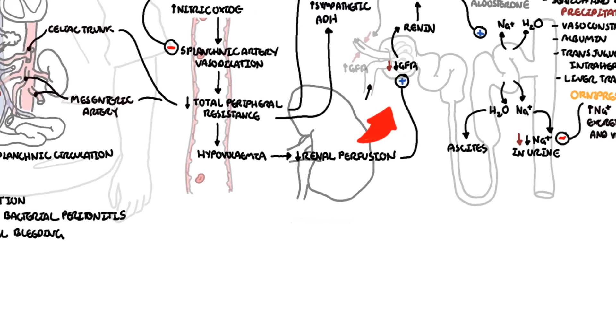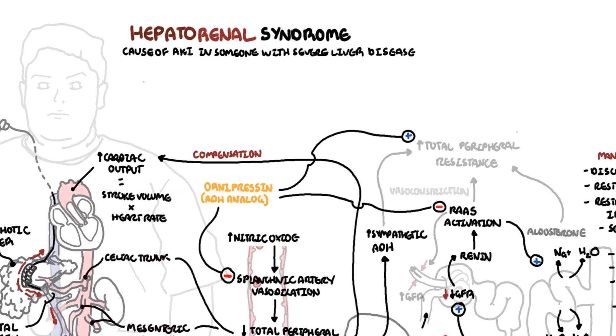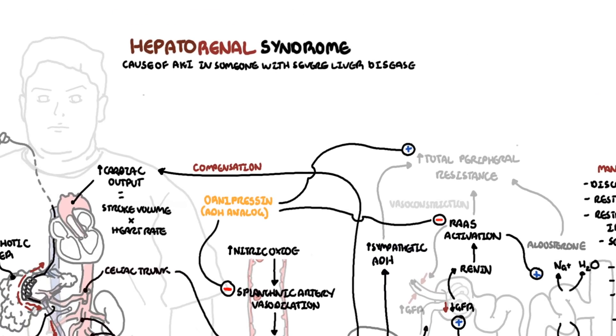The hepatorenal syndrome is characterized by evident acute or chronic liver disease, a progressive rise in serum creatinine, an often normal urine sediment, no or minimal proteinuria, a very low rate of sodium excretion—so low urine sodium—as well as non-oliguria or oliguria depending on the severity.